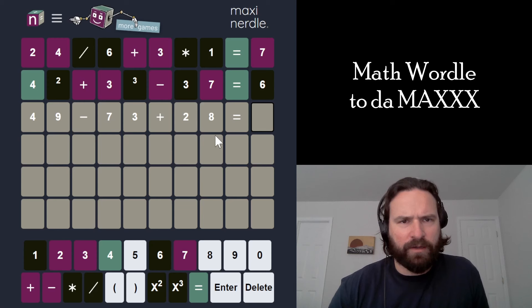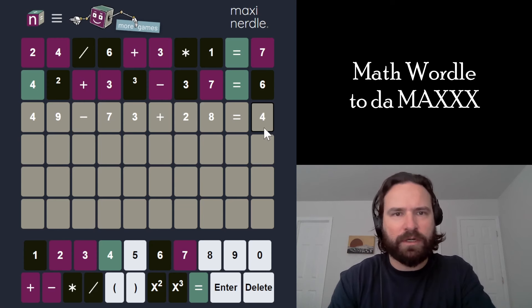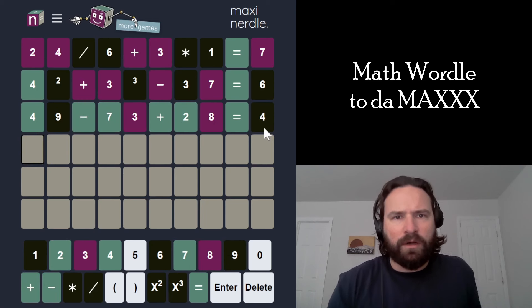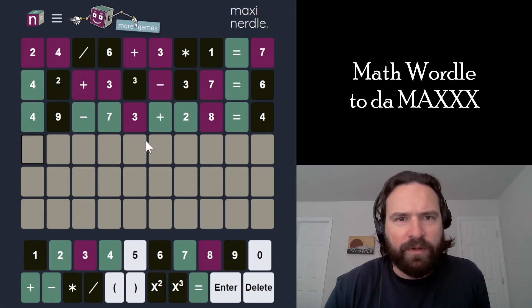So 49 plus 28 is 77. That equals 4. This is fine. Let's try this structure. Okay. I kind of figured that would end up being the structure. This makes a lot of sense.